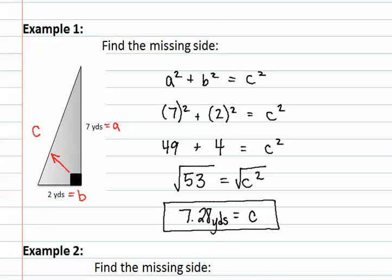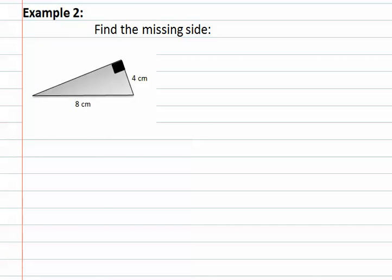We will look at another example. Once again, we are asked to find the missing side. As always, we locate the right angle. We then locate the side directly across from it to identify which side is C. They have given us C in this equation, and so we will label it C. It does not matter whether we label the other two sides A or B, so we will label the blank one A and the other B.